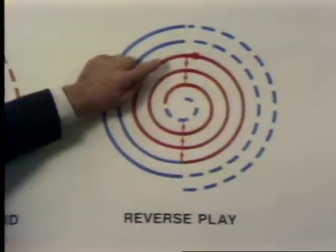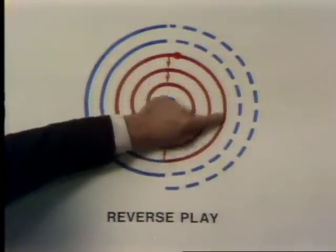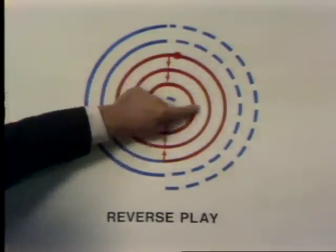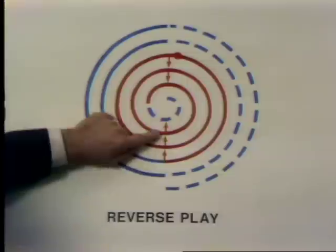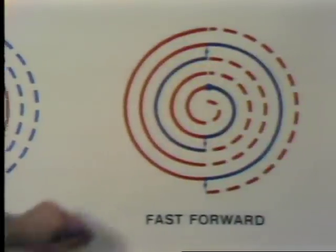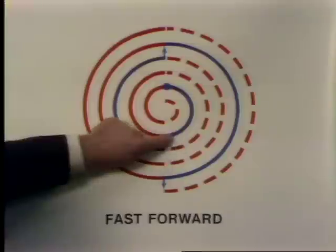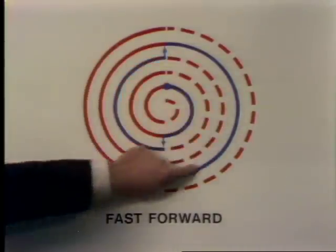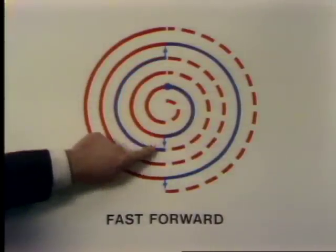In reverse motion, the beam jumps back one track after each field, so at the end of each revolution the beam is one track behind where it started — one forward, two back. Fast forward is exactly the opposite: the beam jumps forward one track after each field, so after each revolution the beam is three tracks further ahead. That's why fast forward on the Pioneer player is not twice, but three times the speed of normal play.